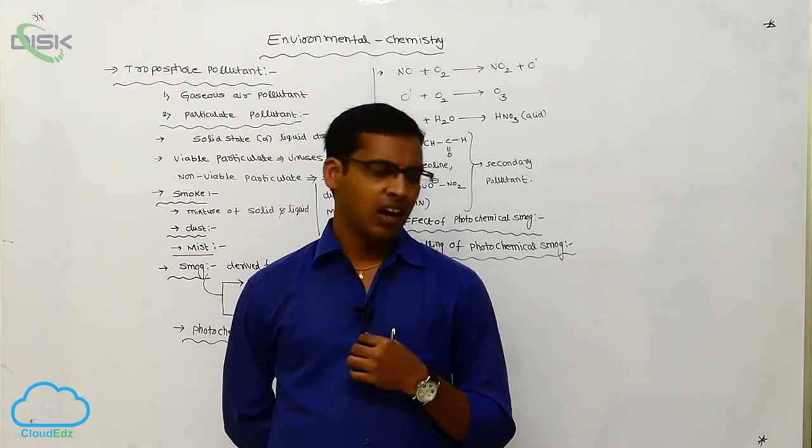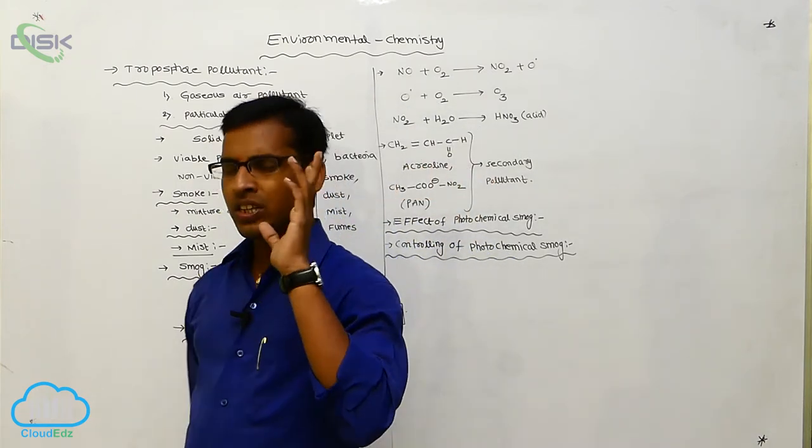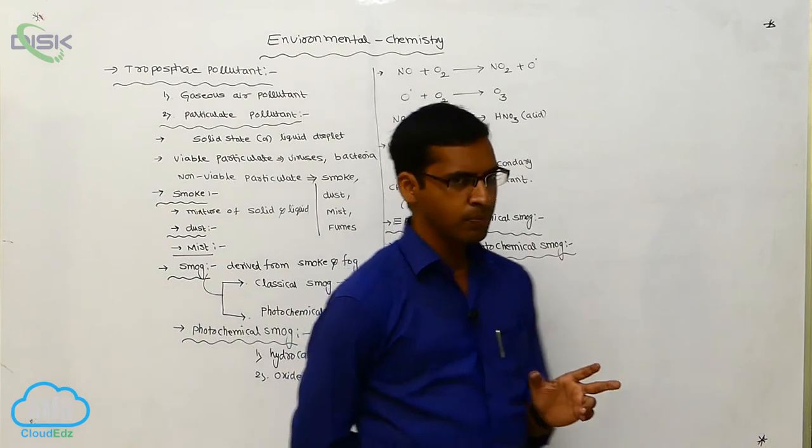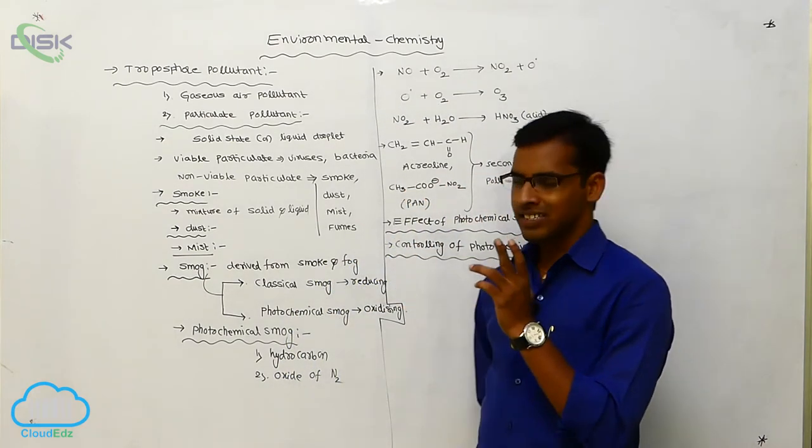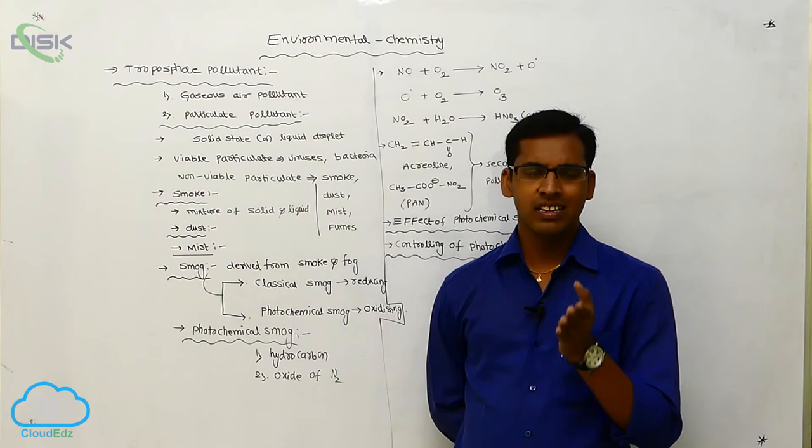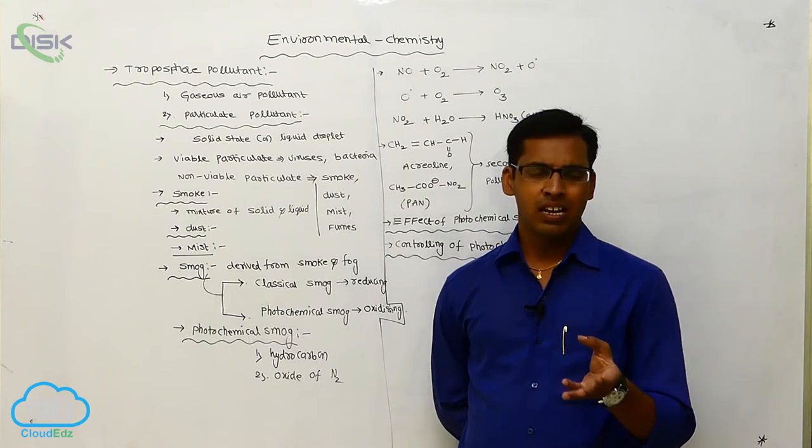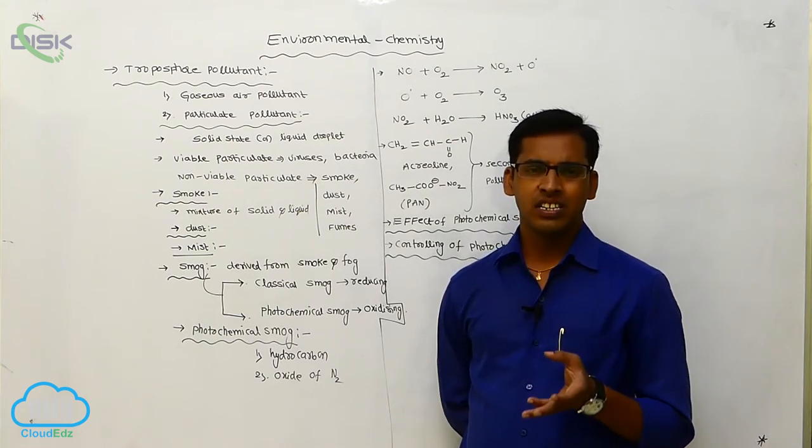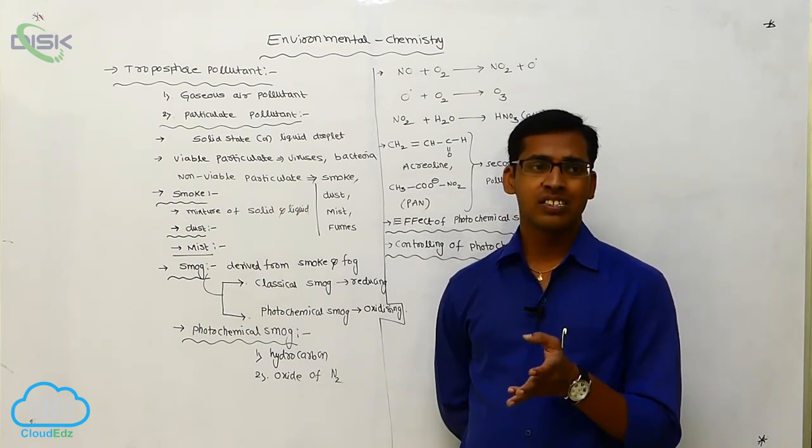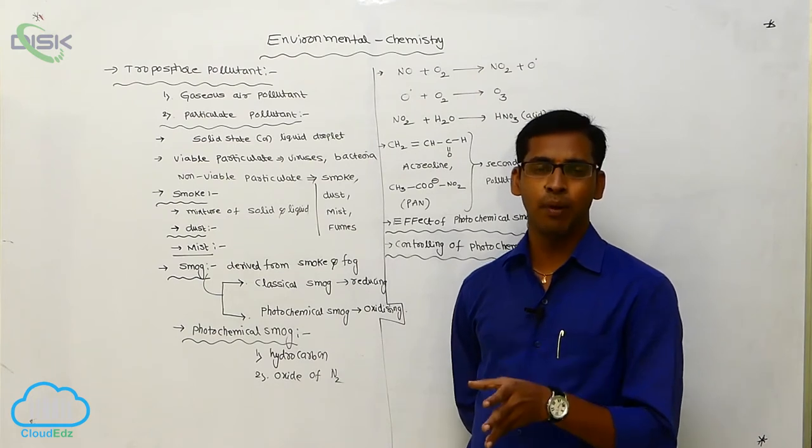And next one is, after the completion of photochemical smog, we are discussing the troposphere pollutants. The troposphere pollutants are two types: one is gaseous air pollutant and particulate pollutant. The gaseous air pollutants like oxides of sulfur. The oxides of sulfur means sulfur dioxide. This sulfur dioxide mainly affects human beings, it causes skin cancer, asthma, bronchitis, etc. We discussed this last class. Nitrogen NO2, nitrogen oxide, and carbon, carbon monoxide. Carbon monoxide is a poisonous gas, carbon dioxide is a non-poisonous gas.